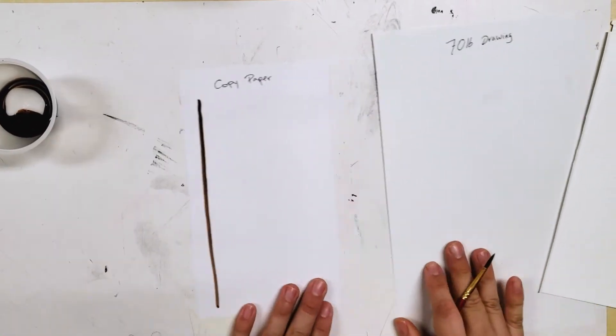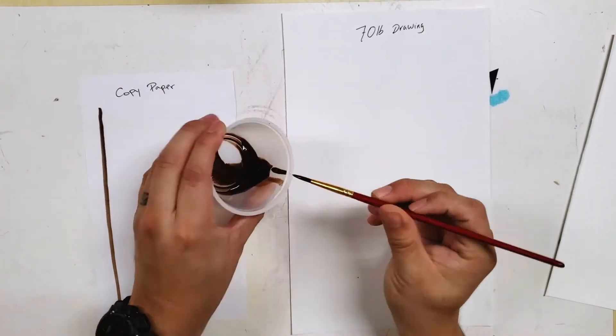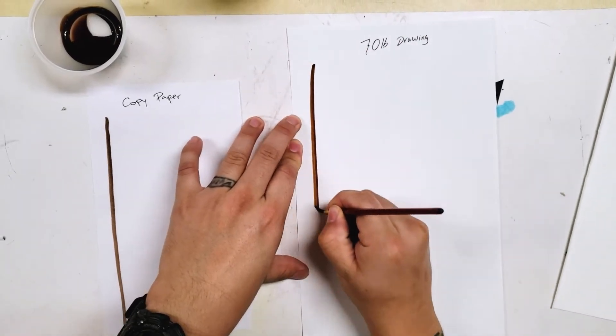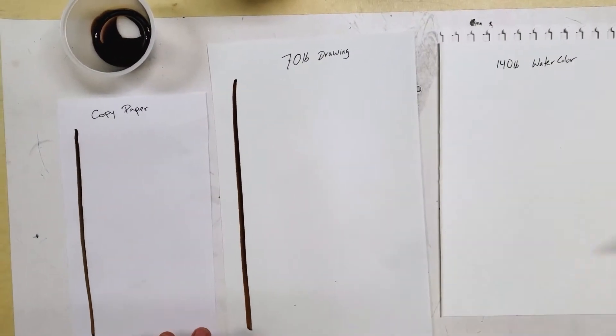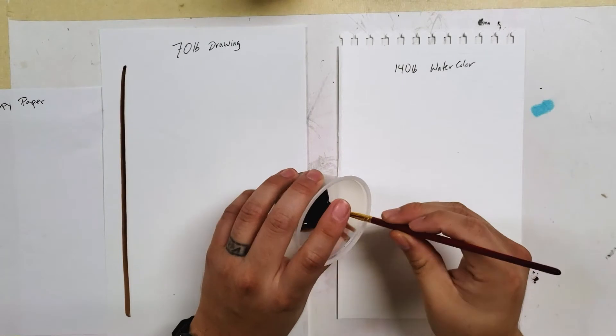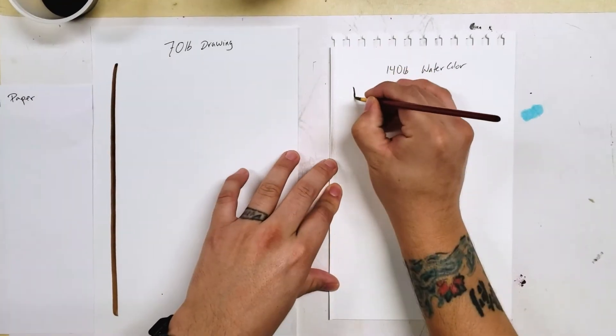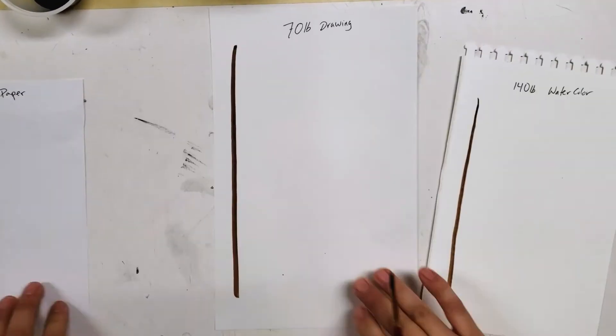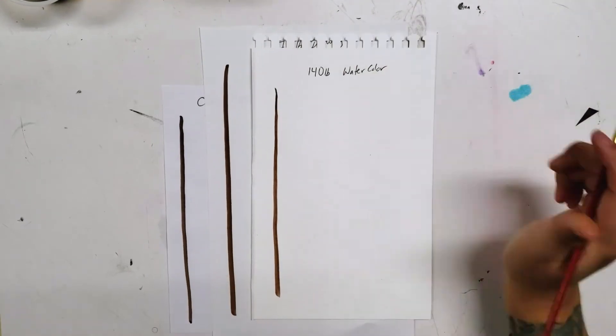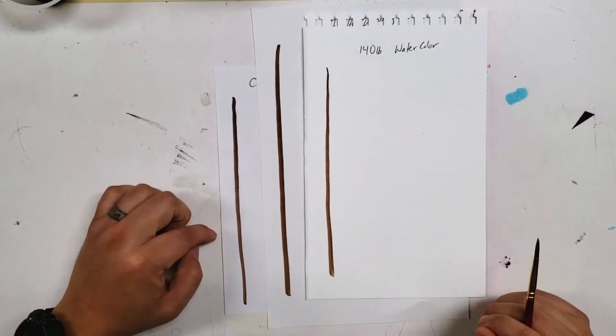We have copy paper. Here's some India ink. Copy paper being the thinnest one of the leaves and watercolor paper being the thickest one. You can see how they each take the India ink. One stroke apiece.